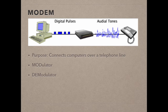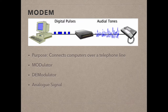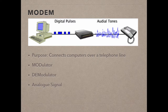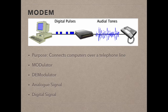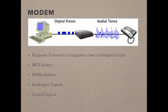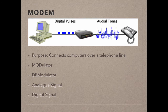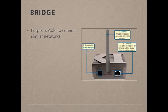Analogue signals are a continuous electric current that varies in intensity depending on the loudness of the voice. Digital signals, on the other hand, are non-continuous currents, so communication is done with varying pulses of current. A modem is needed because a computer does not understand an analogue wave, and digital data cannot be sent down telephone lines.